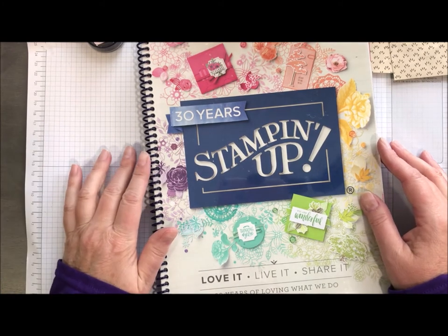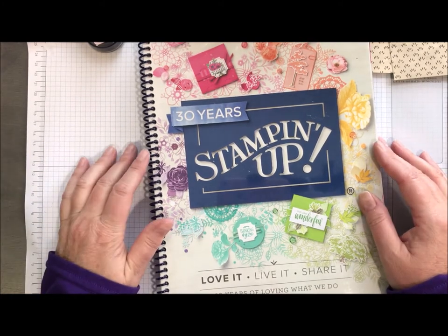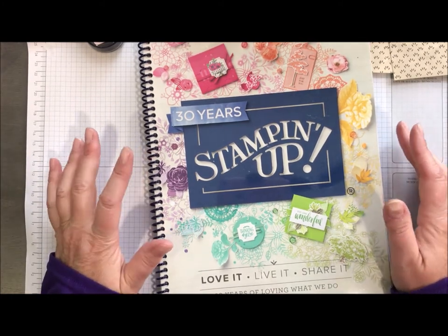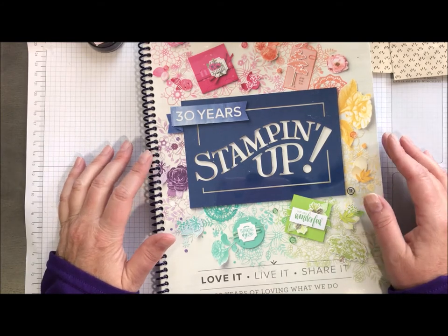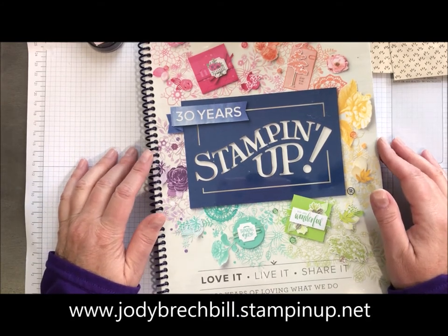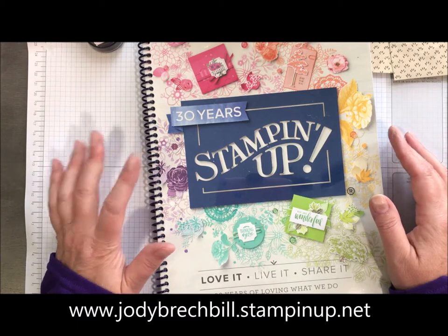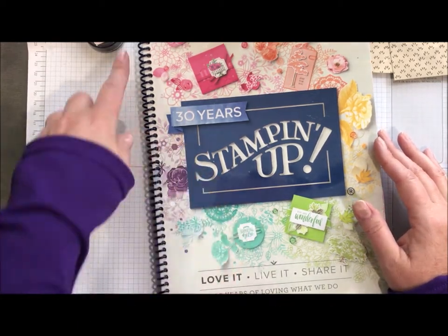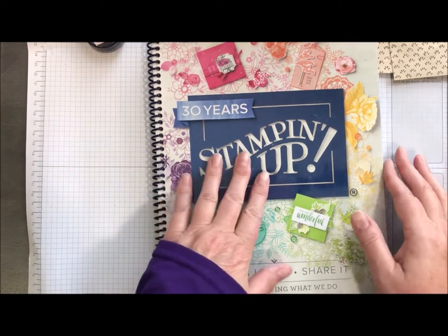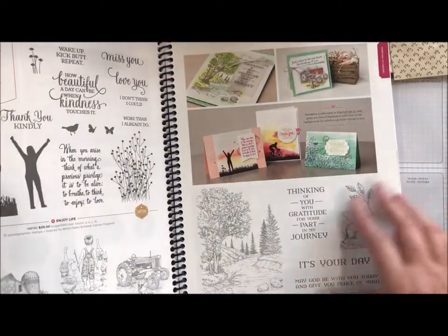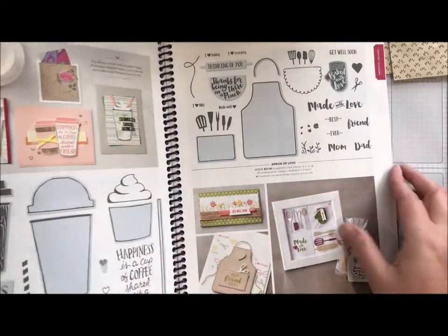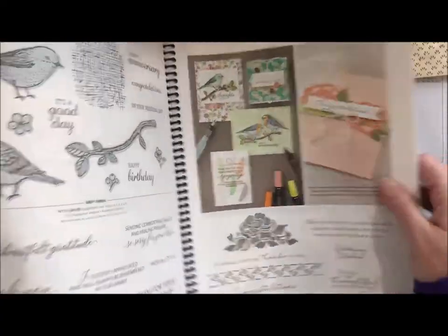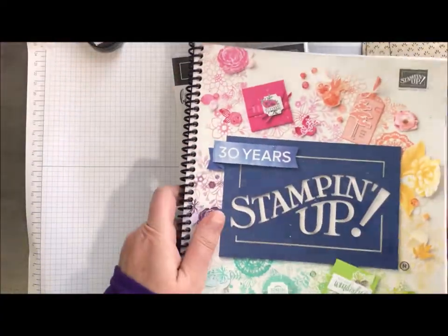I can definitely help you. Or if you have a demonstrator that you work with, touch base with them. You can always check it out online at www.jodibrackbill.stampinup.net. First thing I do when I get my catalog is I take it to Staples and I have my spiral binding put in. It just makes it so much nicer when you're looking through your catalog and it lays nice and flat.